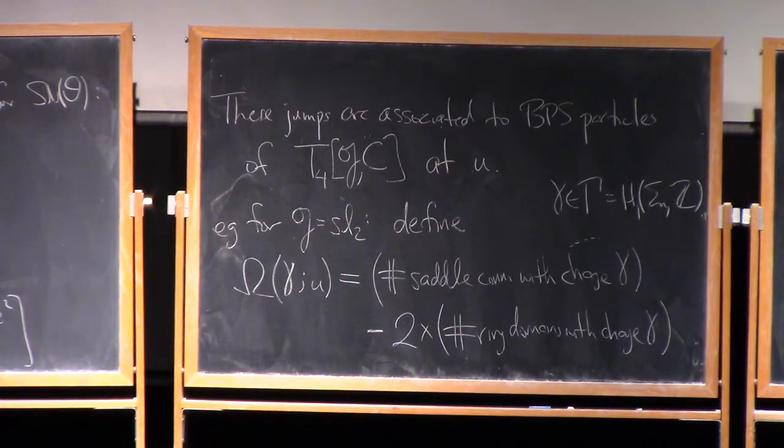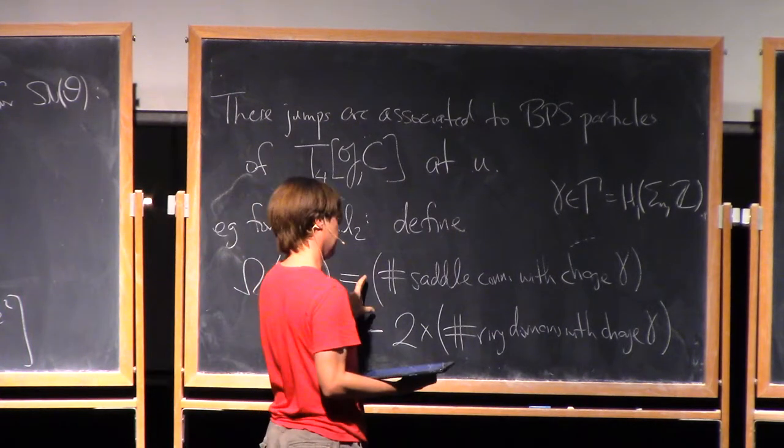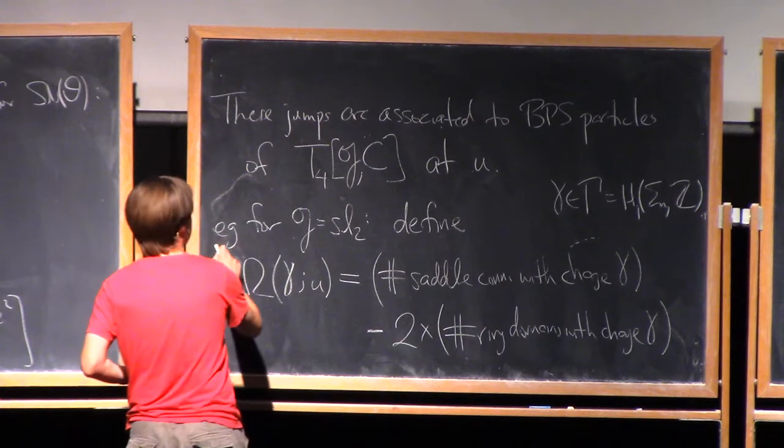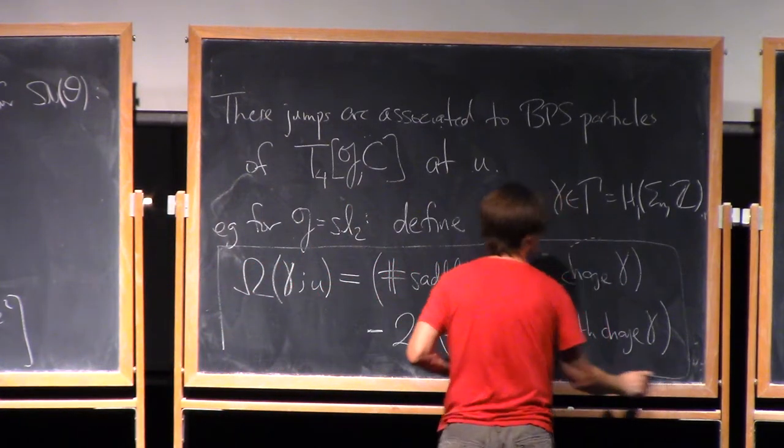So also, for the ring domain, you can define a charge. Just lift this loop up to both sheets, take their difference, and you get an element of gamma. So that's a kind of mathematical definition of a number.